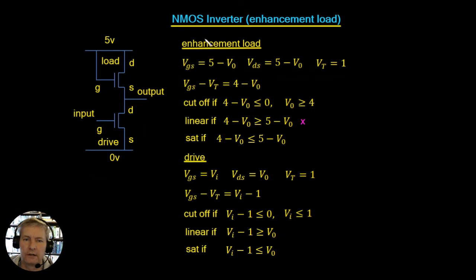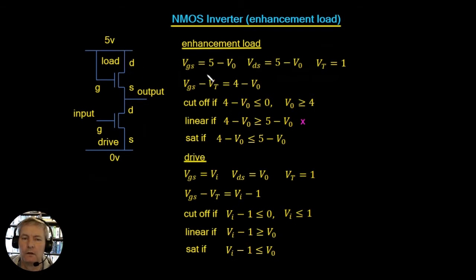The load transistor is an enhancement NMOS. The gate is connected to the 5-volt rail. Since it's an NMOS device, the charge carriers are electrons. Electrons travel from a low voltage to a high voltage, so the electrons are travelling from the source to the drain. This means the lower-voltage terminal is the source and the upper terminal connected to the 5V rail is the drain.